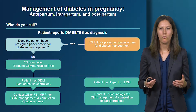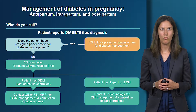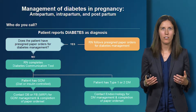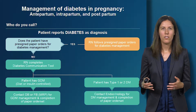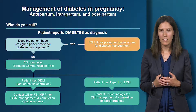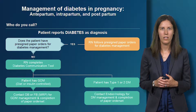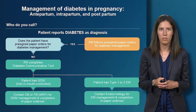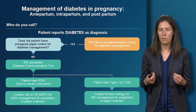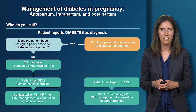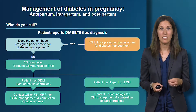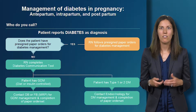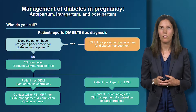First, we'll go through a workflow algorithm for the management of diabetes in pregnancy, covering all phases — antepartum, intrapartum, and postpartum. When a patient reports a history of diabetes, the first question to ask is: does the patient have a pre-signed paper order set for diabetes management? These are pre-signed and patients often come in with them after completing them in their outpatient endocrinology clinics. If yes, the RN follows the pre-signed paper order set.